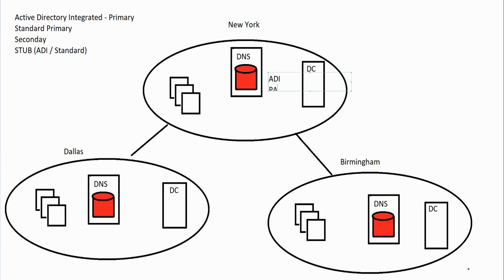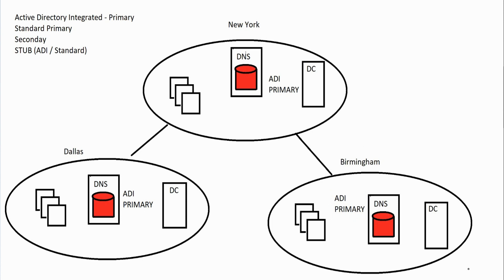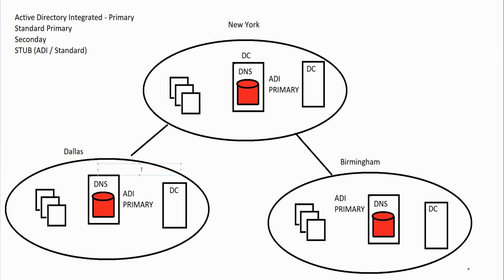If we make every DNS server an ADI primary, there's a rule: you can only have an ADI primary if all of your DNS servers are also domain controllers. That basically means each DNS server must also be a DC. So when the question comes up — should I make my DNS servers domain controllers? — the answer is usually yes, because if you don't, you cannot use the ADI primary option, which is the preferred configuration.